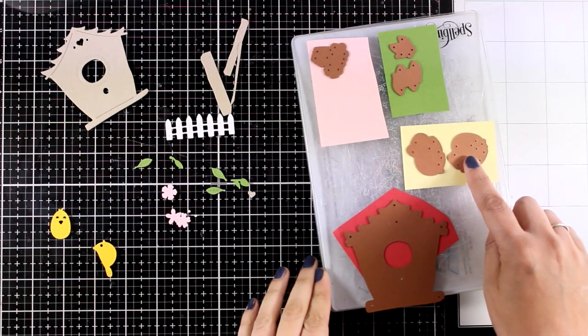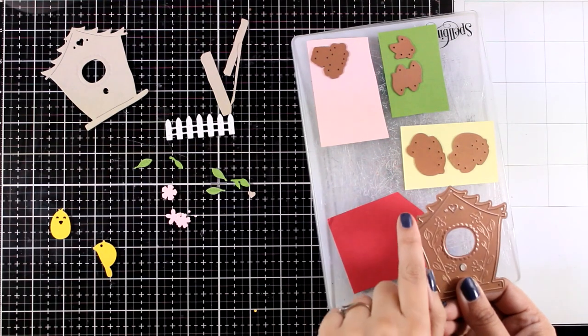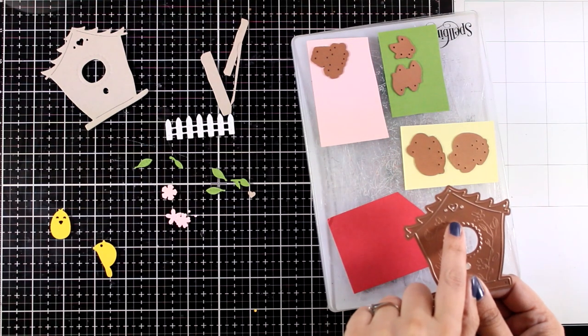I'm going to run the birds one more time out of lighter yellow cardstock as well as the house, because I want to have an extra roof.